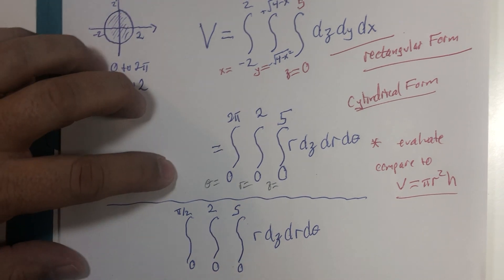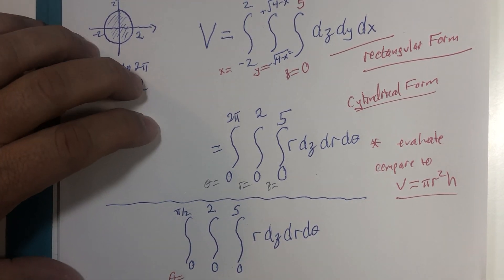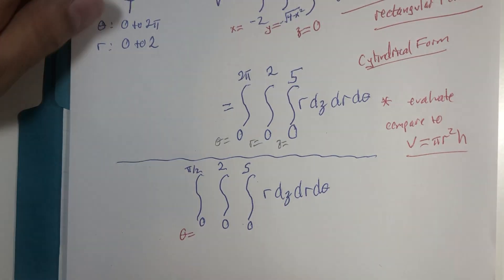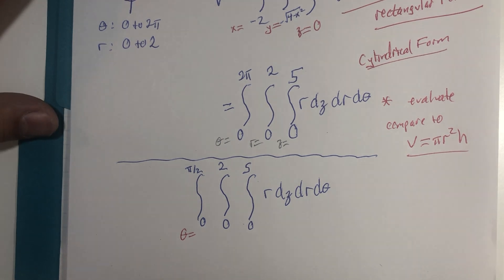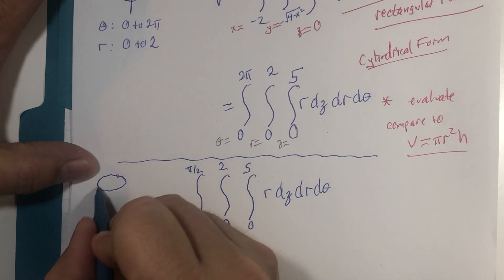What if I were to change the theta boundaries only? What if I were to do that?